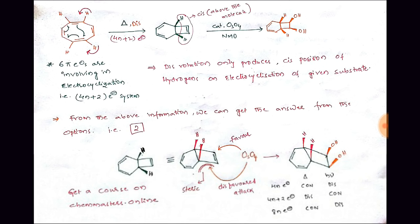In the given substrate we have four pi bonds, and to get the given product there is the possibility of only three pi bonds being involved in electrocyclization through the concerted mechanism. Whenever there is involvement of six electrons, that is simply called a 4n+2 electron system. In the problem we have been given thermal (heat) conditions.